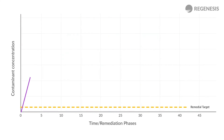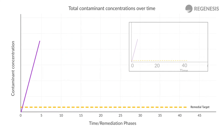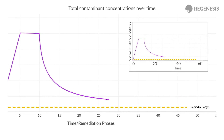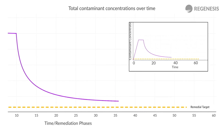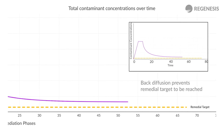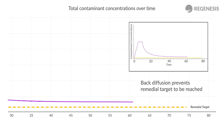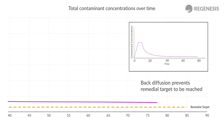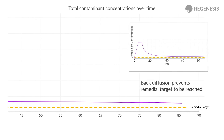Once loaded with contamination, the low permeability zone will provide an ongoing secondary source of contamination. This will back diffuse into the mobile porosity and prevent remedial targets from being achieved through mass removal.